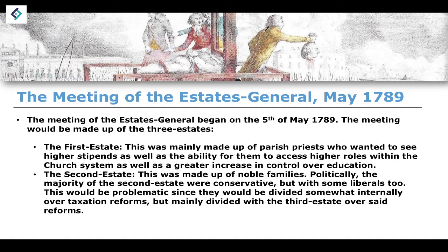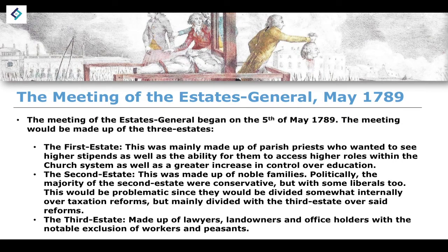The Third Estate was made up of lawyers, landowners, and office holders, with the notable exclusion of workers and peasants. While the Assembly of Nobles had argued that the Estates General needed to be called in order for any land tax or further taxation policy to be passed by Louis XVI — the democratic will of the people agreeing to new taxation — the Estates General wasn't particularly democratic in that it excluded workers and peasants, who still made up the majority of French society.